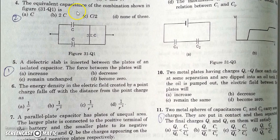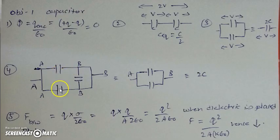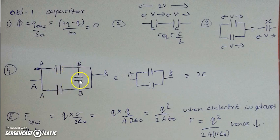The next question asks for the equivalent capacitance of a combination where one capacitor is connected across the same terminals — it will be shorted and removed. The remaining two capacitors are in parallel between terminals A and B. Since they are equal capacitors, the equivalent capacitance will be 2C.